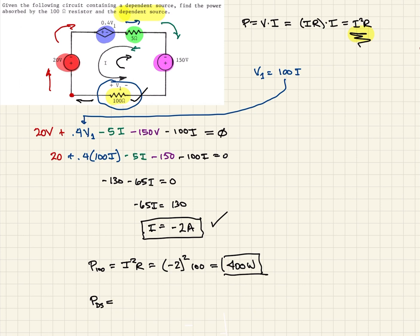Remember that power is just equal to V times I. In this case, since it's supplied, it will be negative. V, we recall that our dependent source, the voltage is 0.4 times V1.